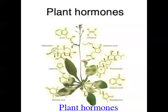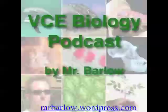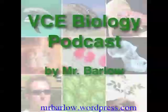Abscisic acid is a growth-inhibiting hormone responsible for the dropping of fruit and leaves falling off trees in autumn. It also controls stomatal opening and closing — those little holes in the bottom of leaves where gas exchange takes place. The last class of plant hormone is ethylene, which is a gas. Ethylene results in fruit ripening by increasing cellular respiration and converting starch and oil into sugar. A good example is putting ripe bananas in a bag with unripe fruit — the ripe bananas release ethylene gas and make the unripe fruit ripen. That brings episode 28 of the VCE Biology Podcast to a close. I'm Mr Barlow — thanks for listening.